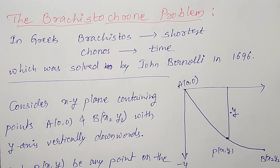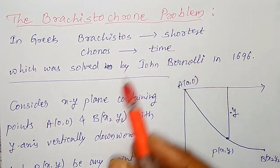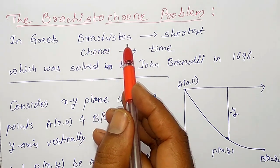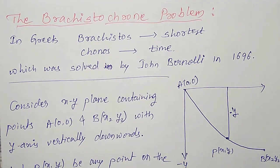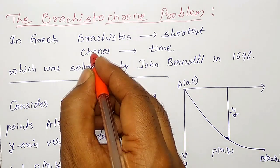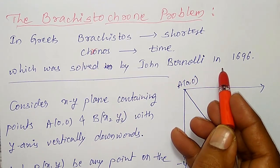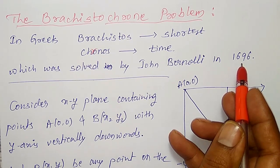A very important application of calculus of variation is the geodesic problem I am going to discuss here — that is the Brachistochrone problem. The word Brachistochrone comes from Greek: Brachistos means shortest and Chronos means time. It was solved by John Bernoulli in 1696.